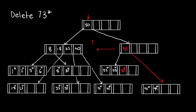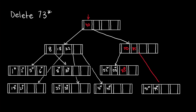Again, we look at the sibling entry, which is completely full in this case. So we split the sibling entry into two and append 85 to the second entry. Now the parent of these entries, the root, needs to be updated. Now the deletion is complete.